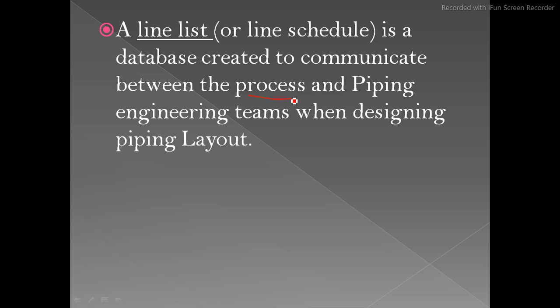When the process team completes the P&ID, they also complete the line list, and it is handed over to the piping department along with the P&IDs. The line list is required for doing piping modeling.